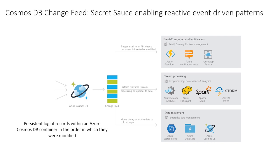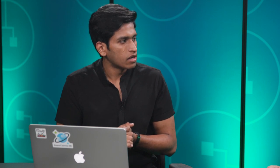Cosmos DB change feed is the secret sauce which enables event-driven patterns and simplifies the Lambda architecture. As a firehose of data comes into the Cosmos DB container, we present a persistent event log view to the database, which is something most other databases do not provide. Essentially, we provide you an API through which you can access the persistent log of records within an Azure Cosmos DB container in the same order in which they were modified.